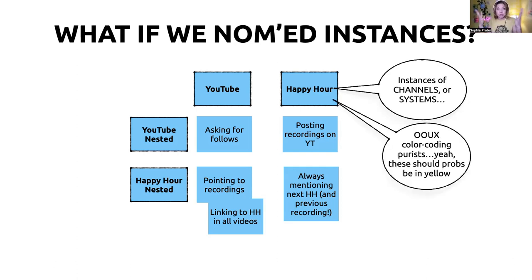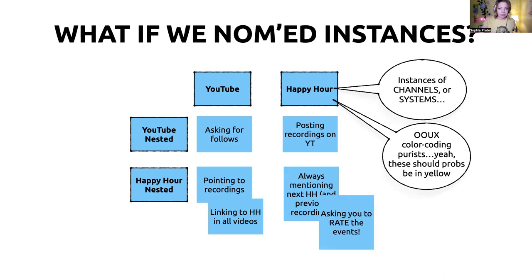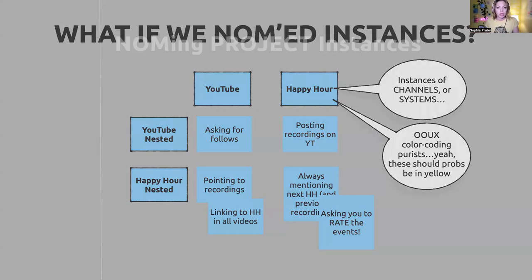So marketing strategy — OUXers, these should probably be in yellow since we're talking about instances. There's also a new rating system on Meetup — you can rate events. We have four-point-seven stars or something. We should ask you to rate this Happy Hour. Just remind you: please tell us how we did.